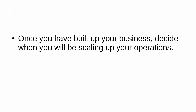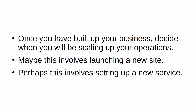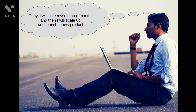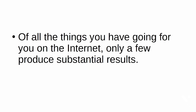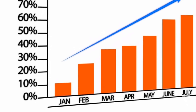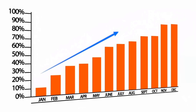Create a consistent scaling schedule: once you've built up your business, decide when you will be scaling up your operations — maybe launching a new site or setting up a new service. Create a schedule, put it on your calendar. Say to yourself, 'I'll give myself three months and then scale up and launch a new product.' Learn to spot success: of all the things you have going on, only a few produce substantial results — learn to spot those and build on your success. Cut out what is not successful — this is the key to failing quickly. After identifying successful projects, scale them up and replicate them.